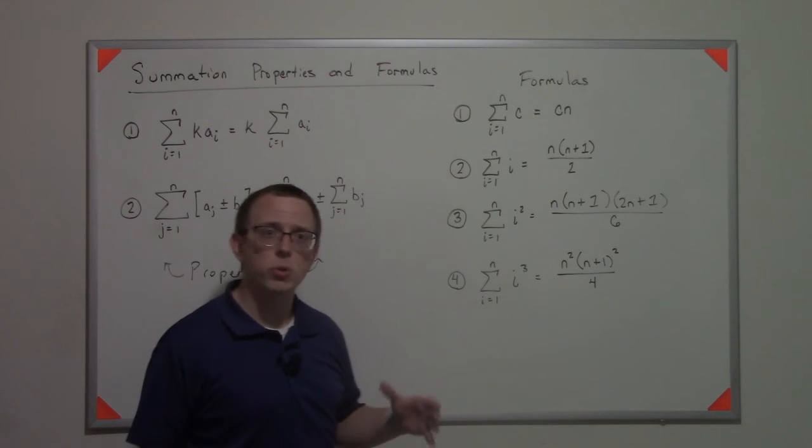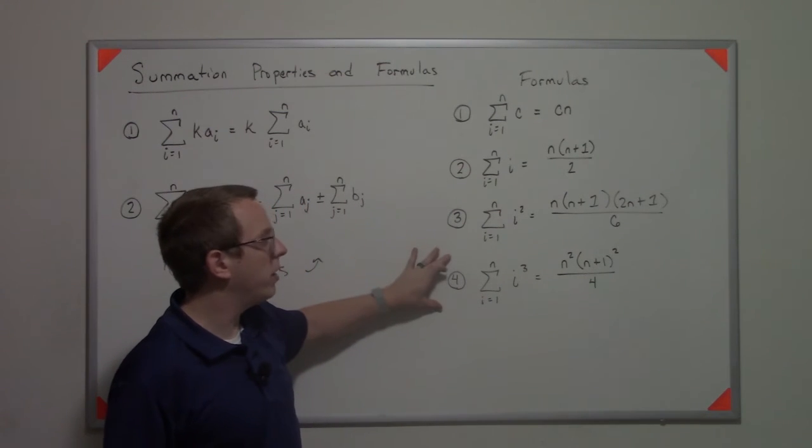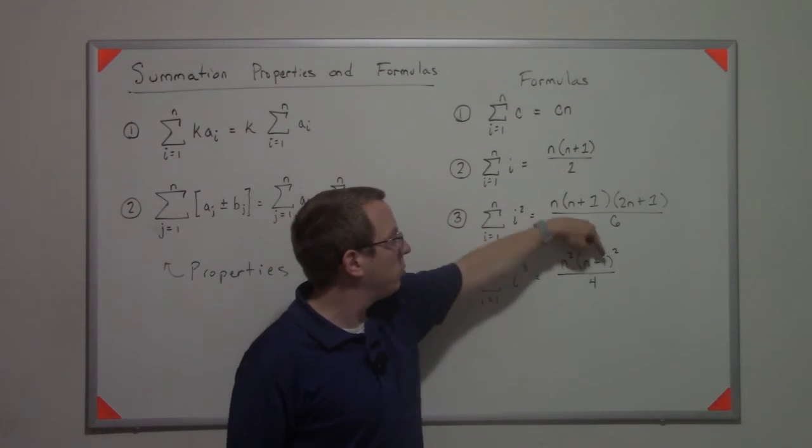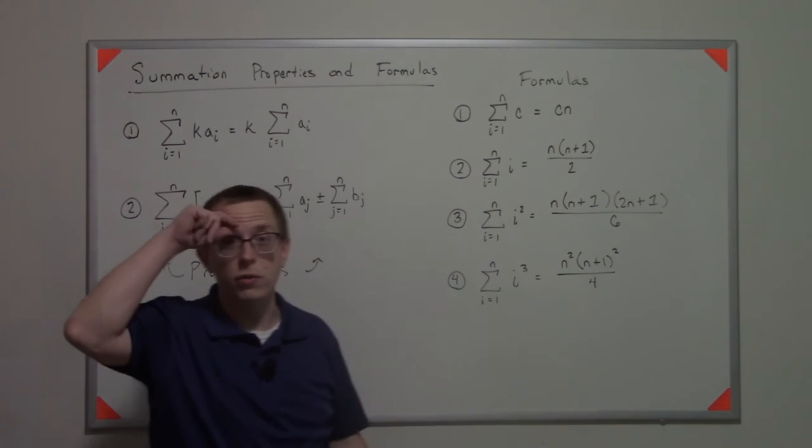We also have formulas for both i squared and i cubed. Now i cubed is easy to remember because it's actually this formula squared. n squared, n plus one squared, two squared is four.